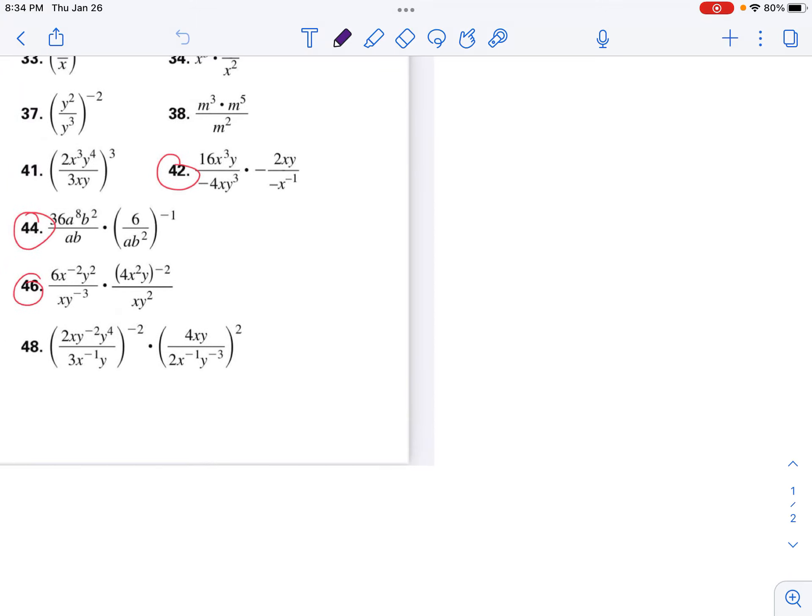I'm going to take a look at number 46, and we have 6x to the negative 2y to the 2 over x, and I'm going to put a multiplication to separate them, y to the negative 3rd times 4x squared y negative 2 over xy squared.